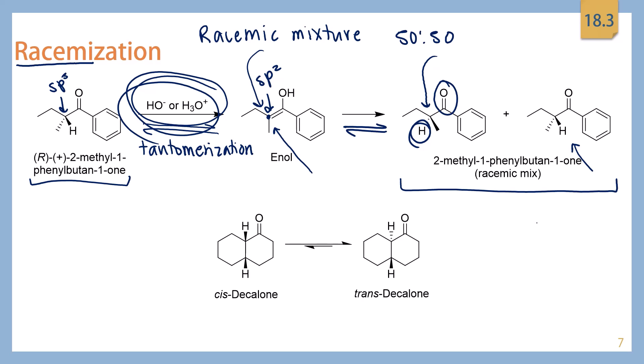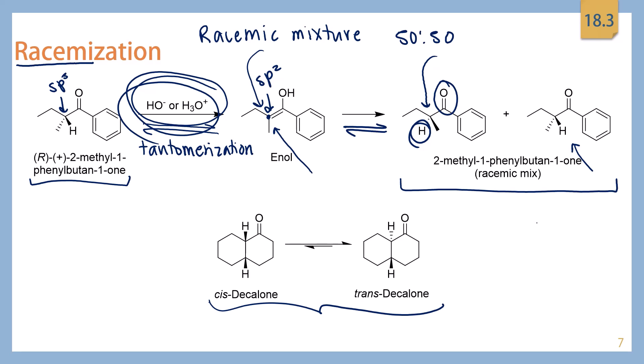Racemization also has the potential to create some interesting processes in bicyclic compounds. If you're starting with a compound that is cis, when this ketone goes through tautomerization, you have a 50-50 chance of the hydrogen ending up back in the cis position or creating a trans compound. Typically, when you have a ketone one position removed from the junction of a bicyclic compound, you're going to see racemization. Decalone is a really good example of this.